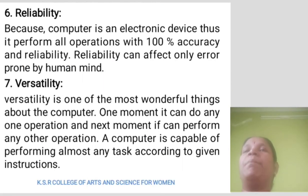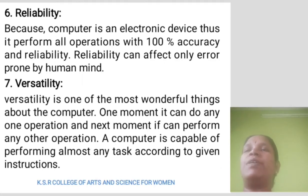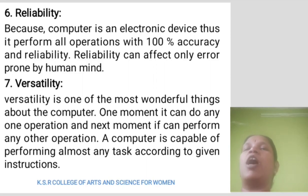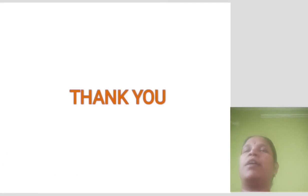Reliability: Because a computer is an electronic device, it performs operations with 100% accuracy and reliability. Versatility: Versatility is one of the most wonderful things about the computer. One moment it can perform one operation and the next moment it can perform any other operation. A computer is capable of performing almost any task according to given instructions. Thank you.